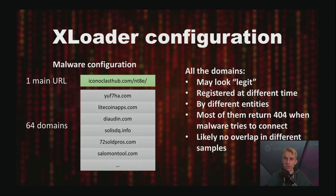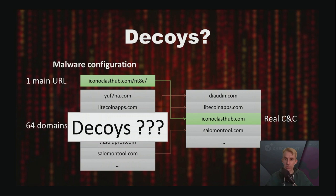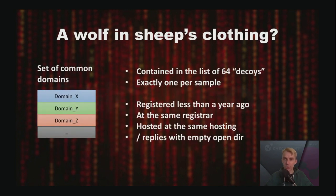At first glance, we didn't see any overlap in the domain list between samples. For Formbook, researchers supposed these domains are decoys and only the main URL is the address of a real C2 server — which was true for Formbook. We used to think XLoader worked the same way. However, two facts made us doubt: the main domain from each configuration appears only once and doesn't overlap between configurations, and some websites pointed to by these domains looked totally legitimate. When we compared thousands of XLoader configurations, we found an anomaly — several domains appearing in the list of 64 domains across different configurations multiple times.